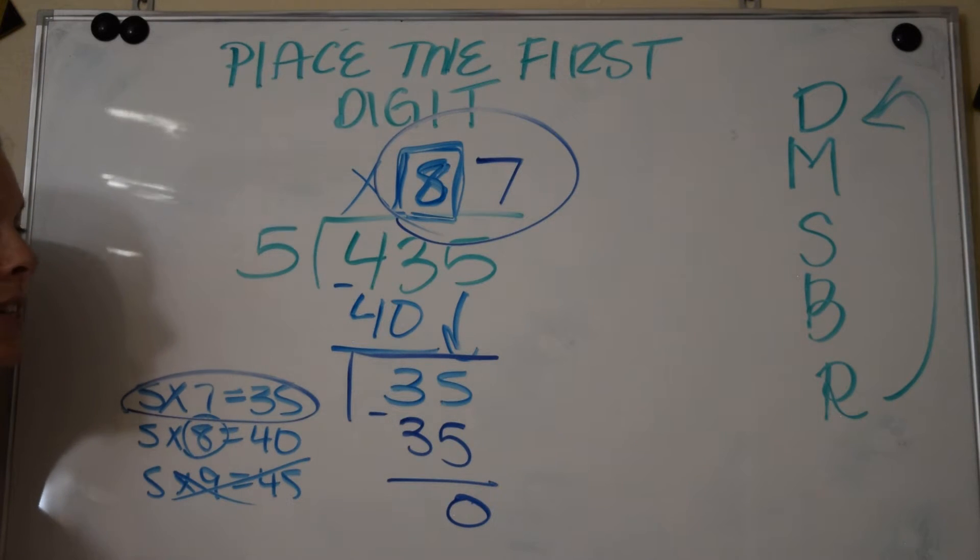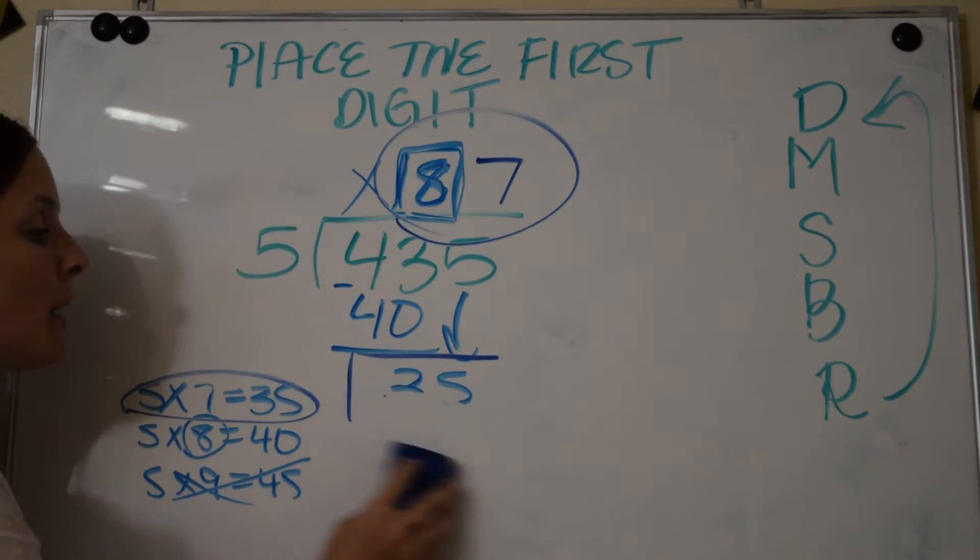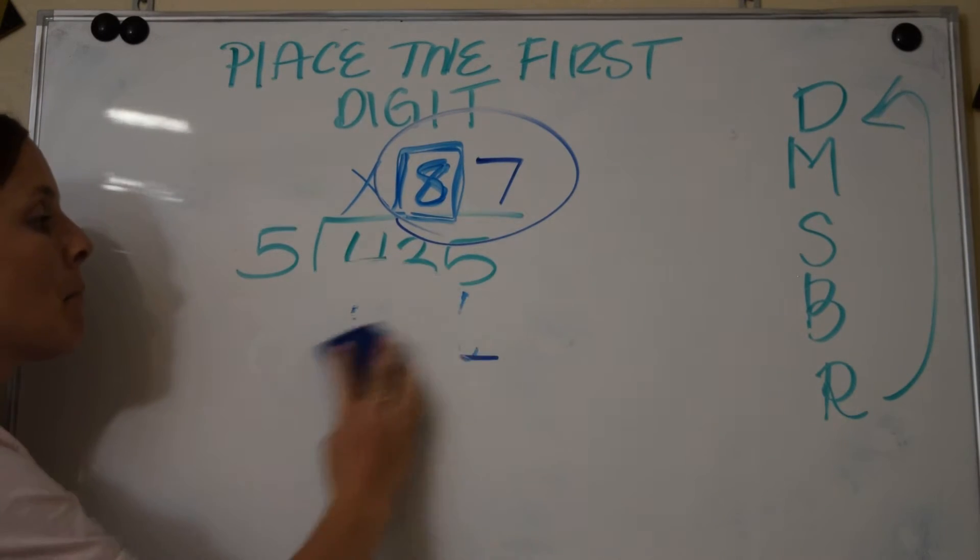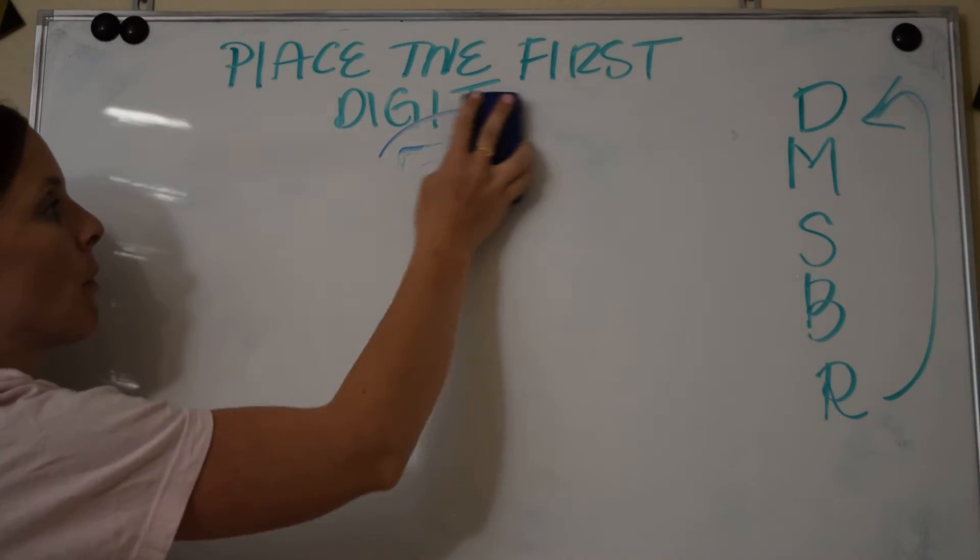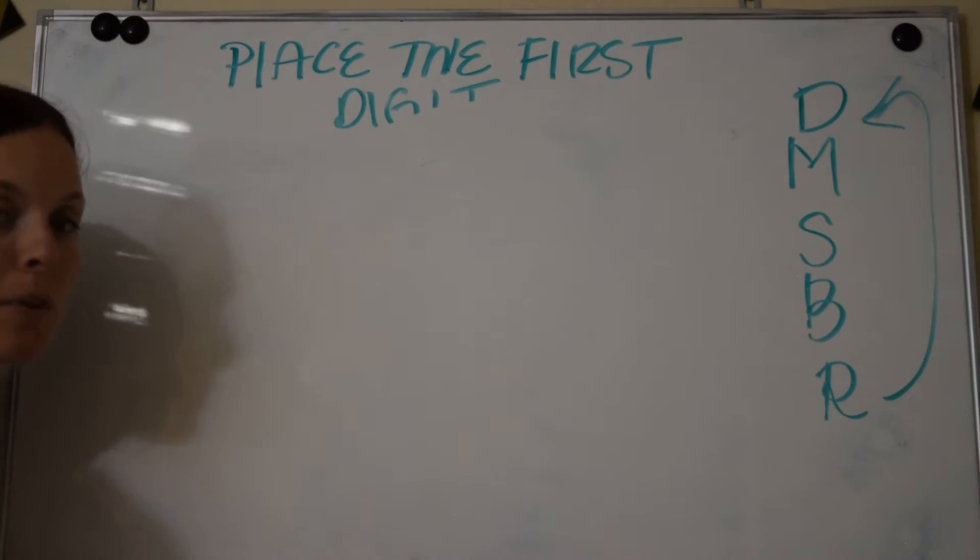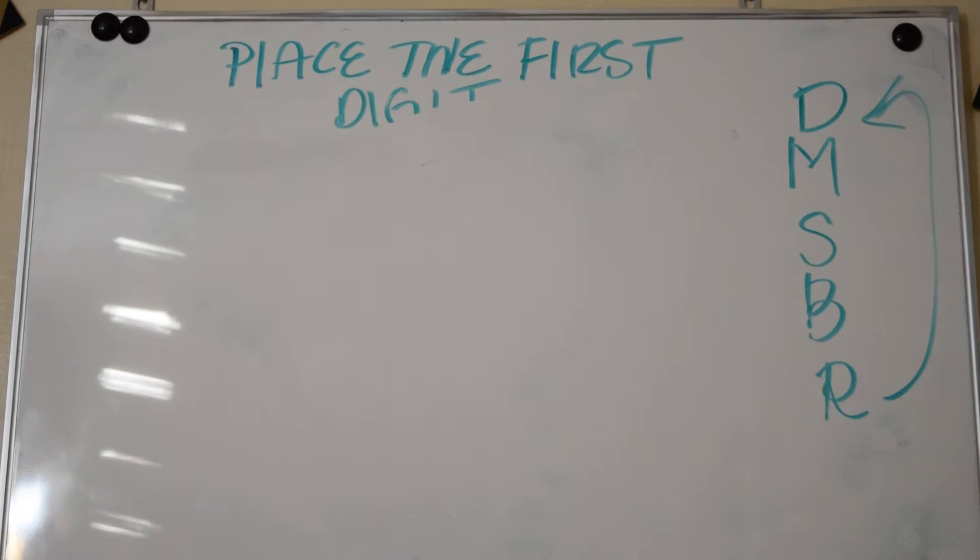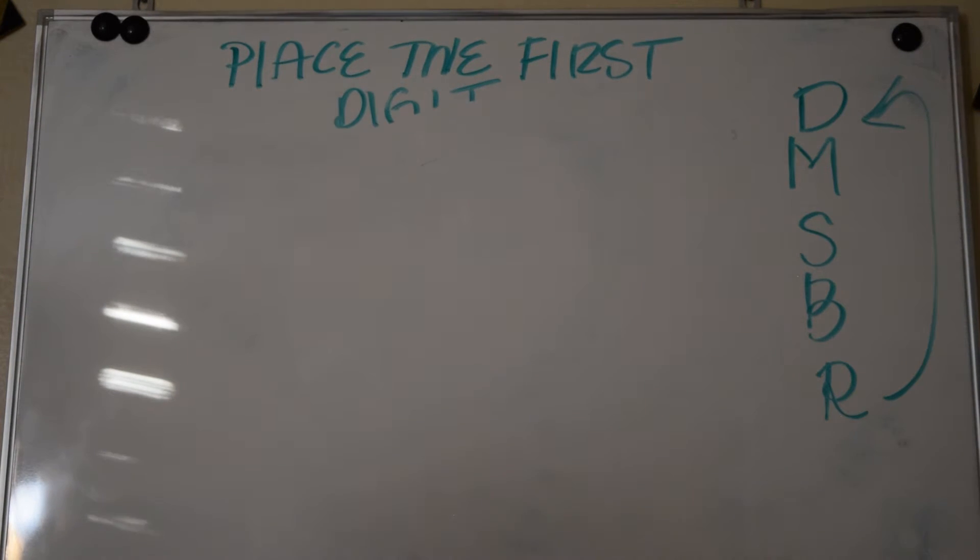So the most important part again of this lesson when working with bigger numbers: where do you put the first digit? You always put it above the number that you're dividing. Because our first step is to divide. Let's do one more example. Let's do a bigger number. What if I had 4527 divided by 6?